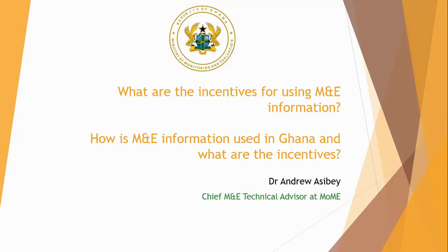In the public sector and in our current democratic dispensation, parties campaign on their manifestos. If they are elected, they start implementing what they have promised. The experience we had when the Ministry of Monitoring and Evaluation was established was that there were a whole list of programs, but most of these programs had no concept notes to guide us. So we had to develop what we call the government resource framework, and that helped a little bit.